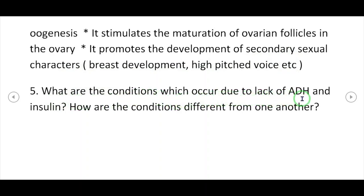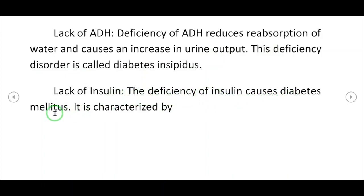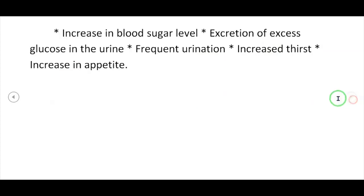Question: Conditions due to lack of ADH and insulin. Deficiency of ADH reduces reabsorption of water and causes an increase in urine output — this disorder is called diabetes insipidus. Deficiency of insulin causes diabetes mellitus, characterized by increase in blood sugar level, excretion of excess glucose in urine, frequent urination, increased thirst and increase in appetite.